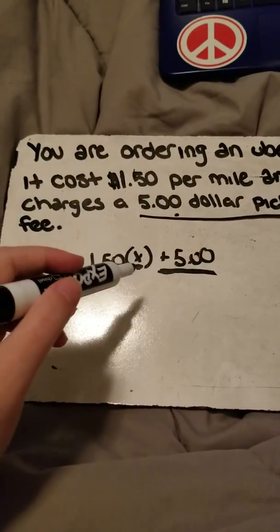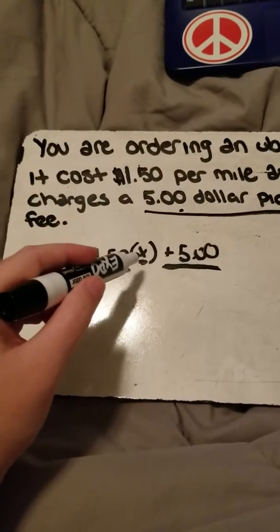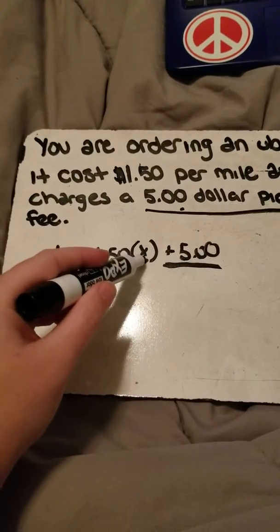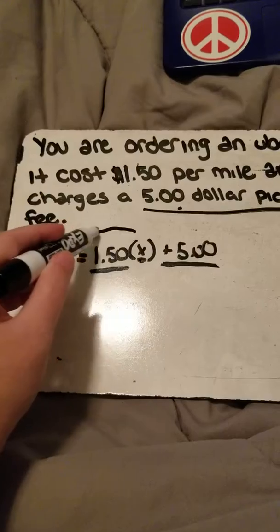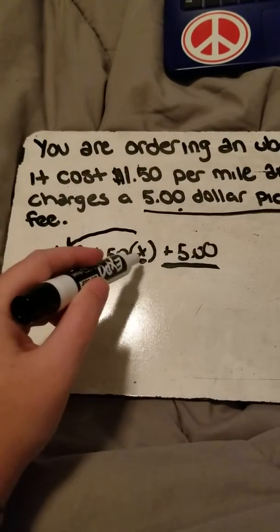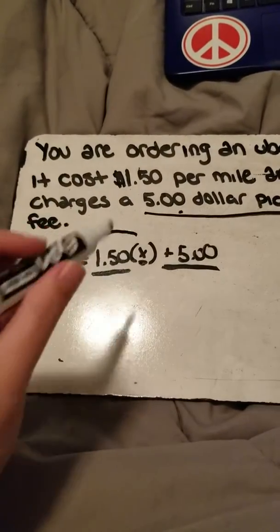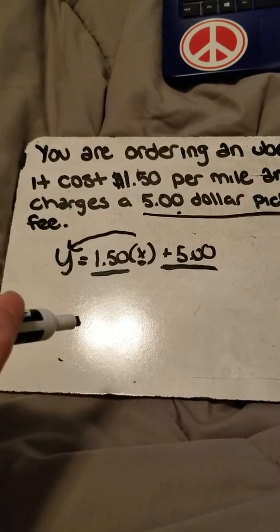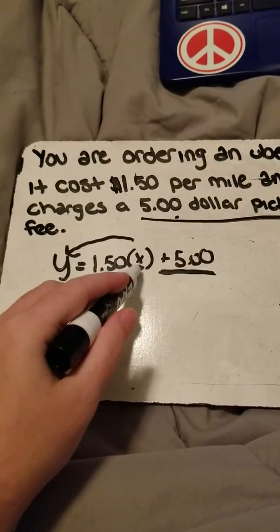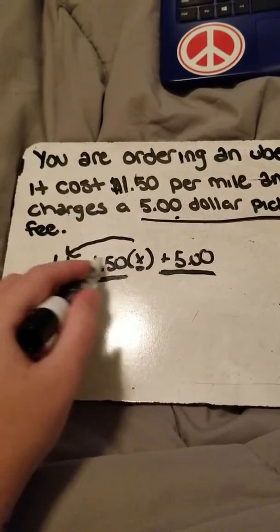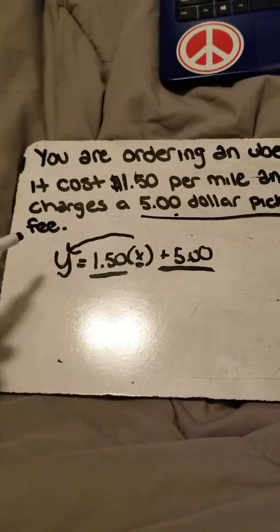This makes sense with our vocabulary. We know that x is independent and y is dependent. It doesn't matter how many miles I go — that's just what x is. But y depends on how many x's I put in. The outcome depends on how many I put in, so it makes sense for x to be there as independent and y to be there as dependent.